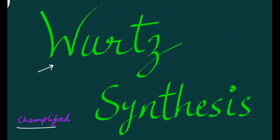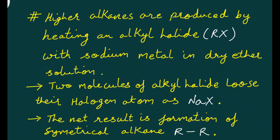Now let's start with the statement. In Wurtz synthesis, higher alkanes are produced — higher alkanes meaning you can produce alkanes of high molecular weight. Higher alkanes are produced by heating an alkyl halide, so in the reactant you have to take an alkyl halide and treat it with sodium metal in dry ether.